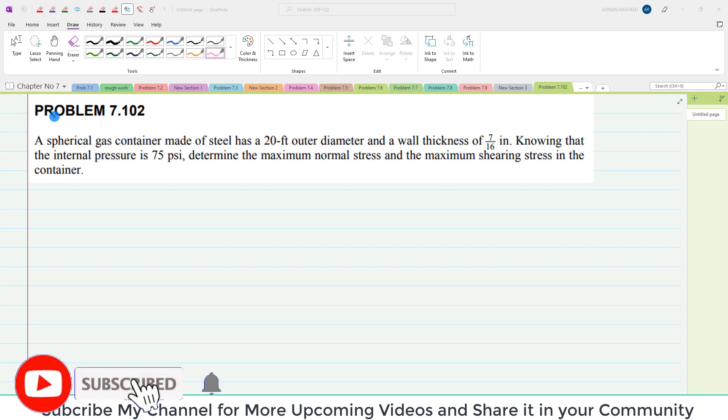Welcome back. Problem 7.102: A spherical gas container made of steel has a 20 feet outer diameter and wall thickness of 7/16 inch. Knowing that the internal pressure is 75 psi, determine the maximum normal stress and maximum shearing stress in the container.